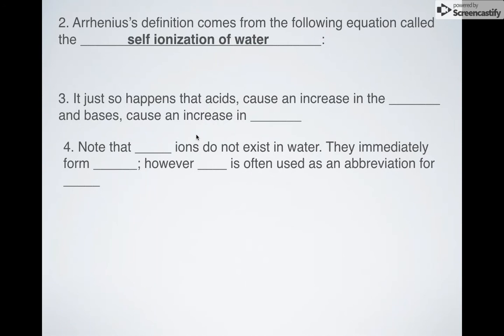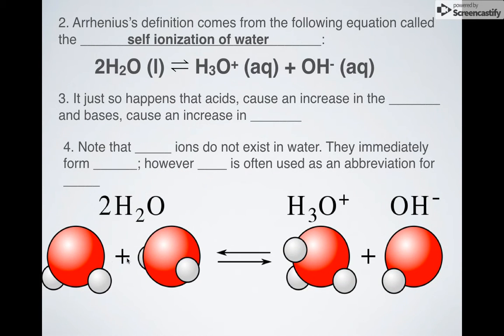Now where did his definition come from? Well it comes from an equation called the self-ionization of water. You have two water molecules in the liquid phase, 2H2O (l) ⇌ H3O+ (aq) + OH- (aq). When they are put together they will spontaneously react and make H3O+ and make OH-. So it just so happens that in this picture you can see that happening. You can see this hydrogen is moving from here and it's going over here. So his definition is acids increase how much of this there is in water. So if you add drops of lemon juice to your water you're going to increase the amount of H3O+ as a result. Bases on the other hand, let's say I add some soap to my water, I'm going to be making instead more hydroxide ions.